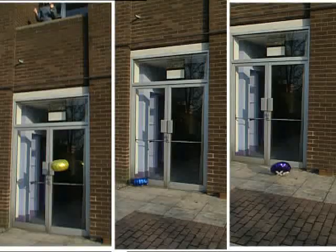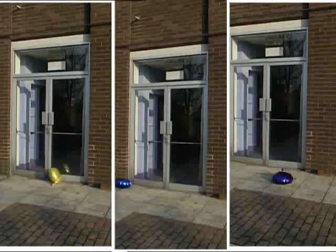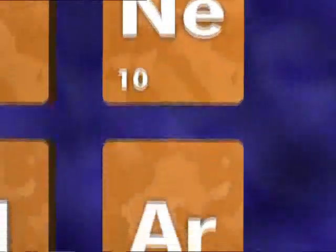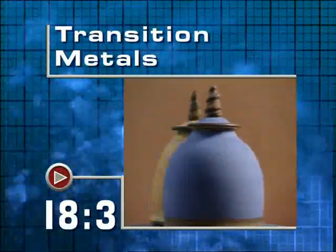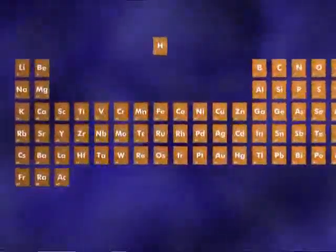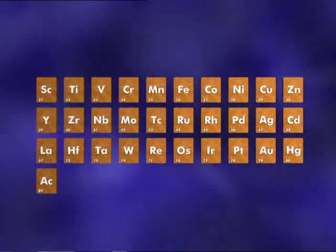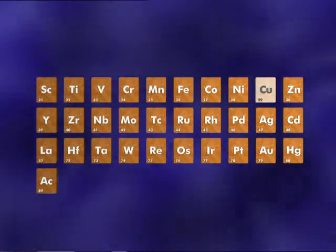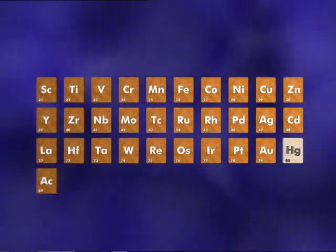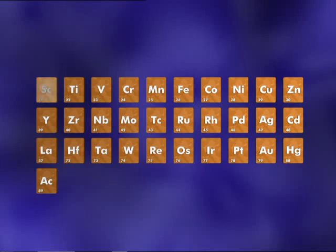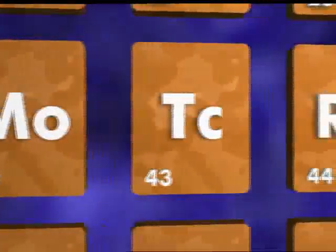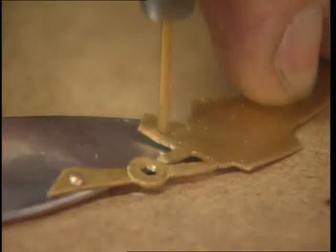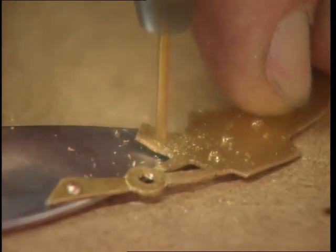Krypton takes a bit longer, followed by argon. The noble gases become more dense as you go down the group. The large block in the middle of the periodic table is home to the transition metals, including well-known metals such as iron, copper, gold and mercury. Other more unusual transition metals include scandium, niobium and ruthenium. They all have similar physical and chemical properties. Transition metals are much less reactive than the metals in groups 1 and 2, so in general the transition metals are more useful.